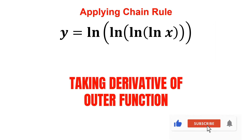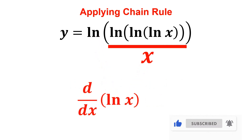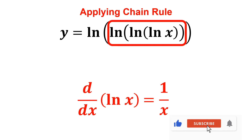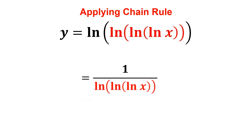We differentiate the outer function. Just as ln x has derivative 1 over x, here our inner function is natural log of natural log of ln x. We take the derivative of the outer function while keeping the inner function the same, giving us 1 over natural log of natural log of ln x.